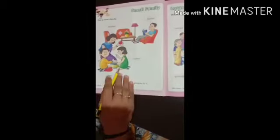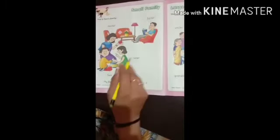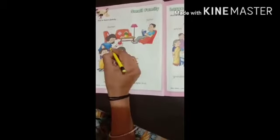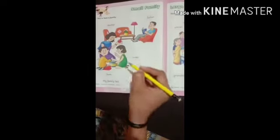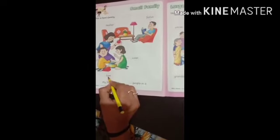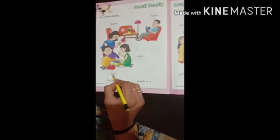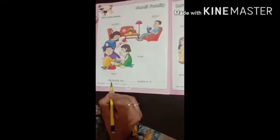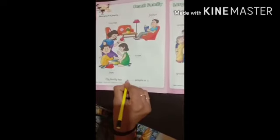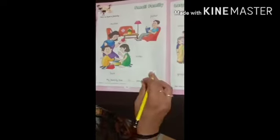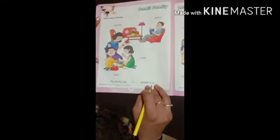How many family members? Father, mother, sister and Sam. How many family members? Four. My family has four people. How many people? Four people.